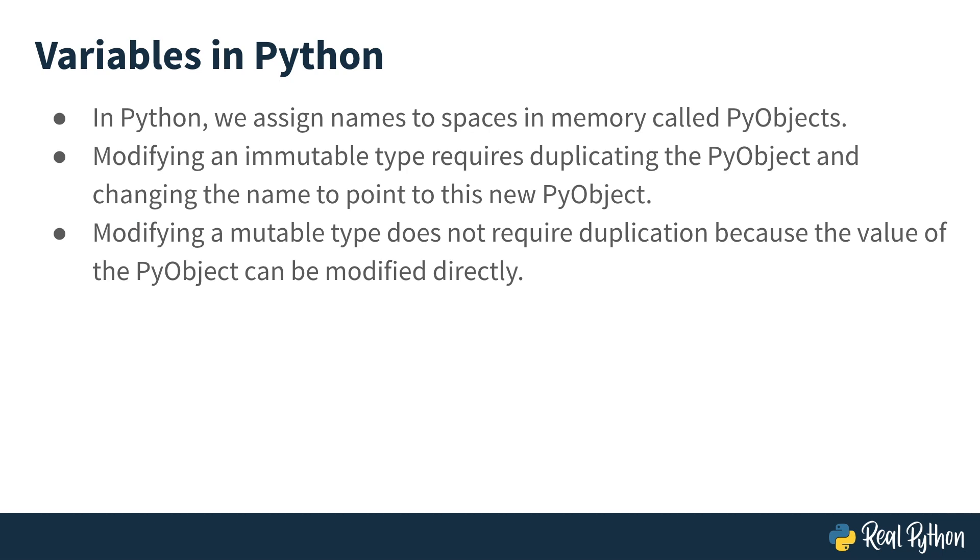Modifying a mutable type will allow the value at that memory space to change, but modifying an immutable type will require a new space in memory, and then the name's pointer will have to change so that it points to the new PyObject.